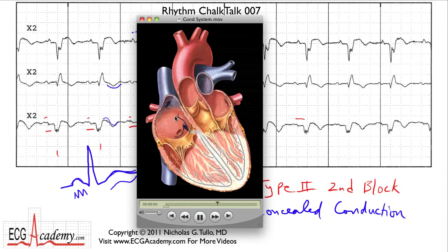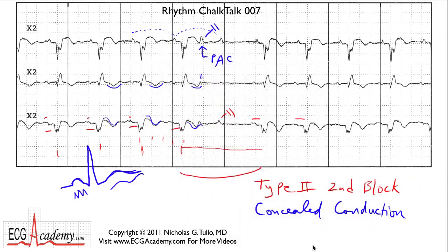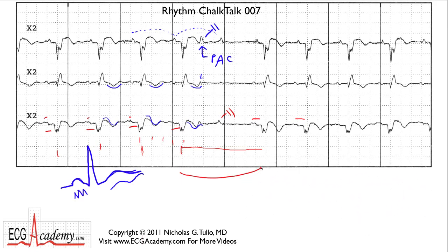There's a Bachmann's bundle behind the aortic root that connects the two atria together. Then here you have the AV node, whose job is to delay the signal slightly. That gives the atria a chance to contract and push the blood through the heart valves — so there's a little bit of delay that's supposed to be there. Normal PR interval should be 120 to 200 milliseconds. Then the signal propagates down the His bundle and the Purkinje system. But the AV node has a very interesting behavior.